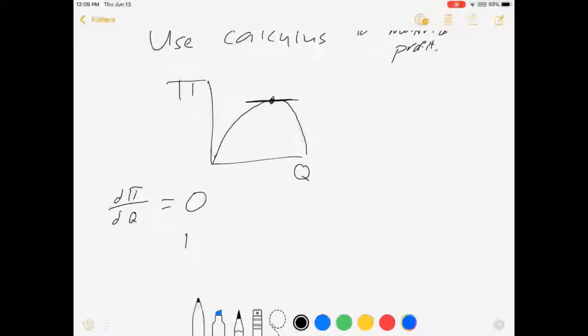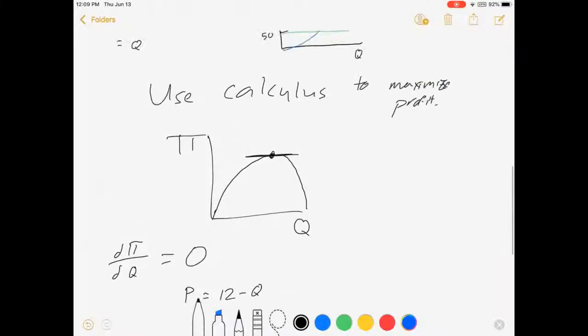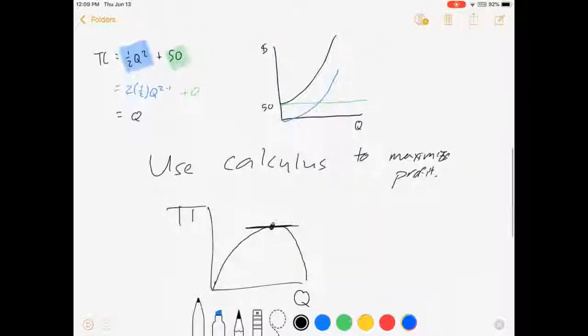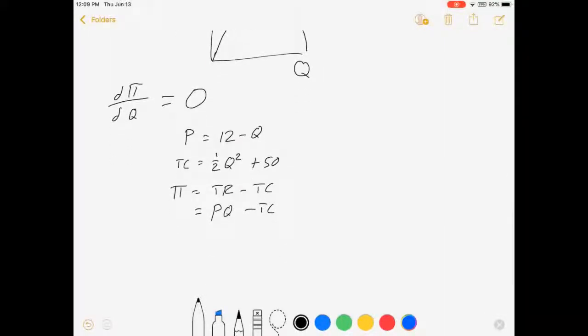gave us a price curve of P = 12 - Q and a total cost curve of TC = ½Q² + 50. Profit is equal to total revenue minus total cost, which is equal to P times Q minus total cost, which is equal to (12 - Q) times Q